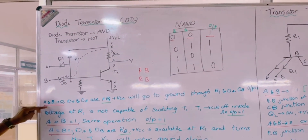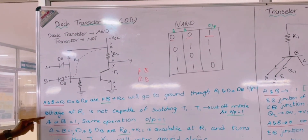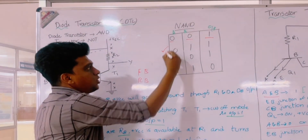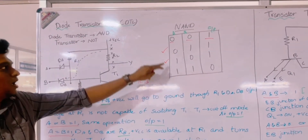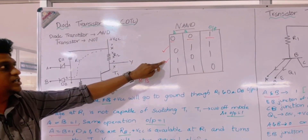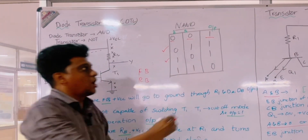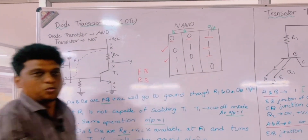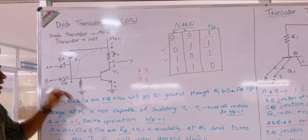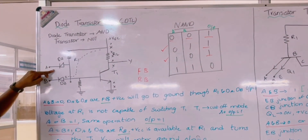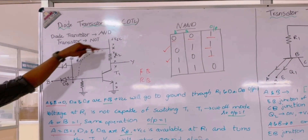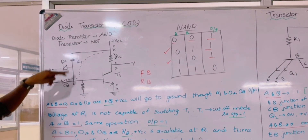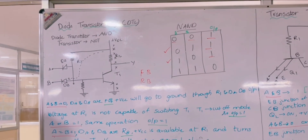The same operation occurs for inputs 0,1 and 1,0. At both these conditions the output is 1, as the diodes again become forward biased and VCC goes to ground through these terminals.